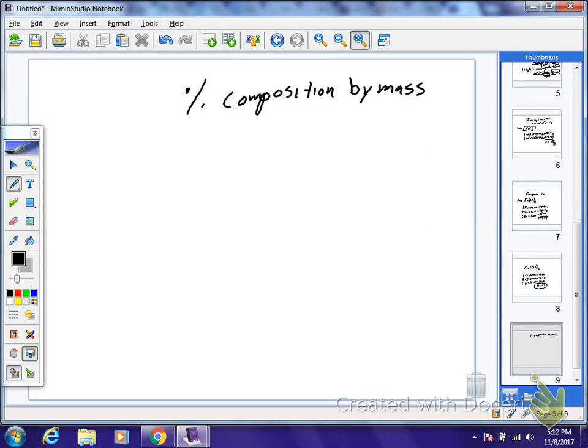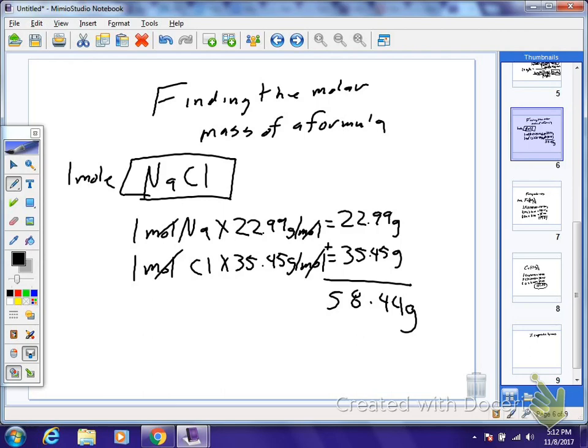So we're going to take a look at a previous example. It's already been worked out. We already know what we're doing when we figure out a molar mass. On a previous video, we went ahead and found the molar mass of a compound of NaCl. We have one of each. We got a total of 58.44.